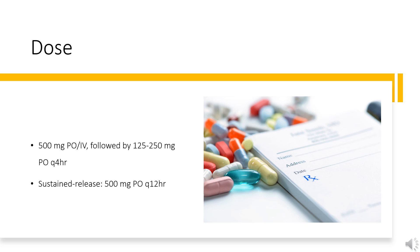Secondary glaucoma: 500 mg PO, followed by 125–250 mg PO every 4 hours. Sustained release: 500 mg PO every 12 hours. Acute altitude sickness — Immediate release: 500–1000 mg/day PO divided every 8 hours. Extended release: 500–1000 mg PO every 12–24 hours. Congestive heart failure associated edema: 250–375 mg (5 mg/kg) PO every morning. Seizure: 30 mg/kg/day PO once daily or divided every 12 hours.